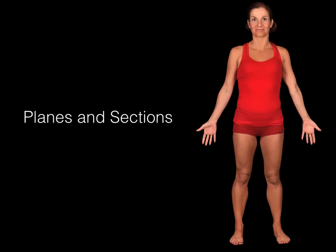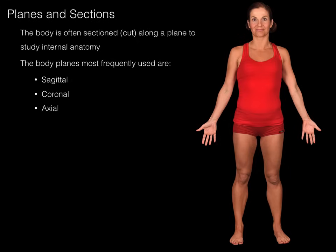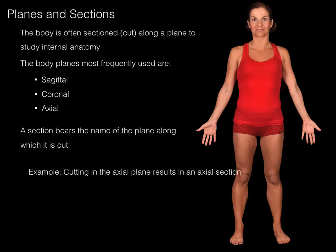Now let's talk about planes and sections — how can we better study the internal parts of anatomy and the relationships inside the body? The body is often sectioned or cut along a plane to study internal anatomy. The body planes most frequently used are sagittal, coronal, and axial. A section bears the name of the plane along which it is cut — cutting in the axial plane results in an axial section. In radiology and imaging, planes and sections are often used synonymously.